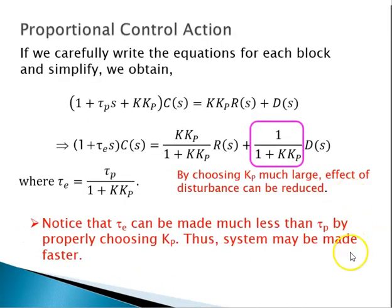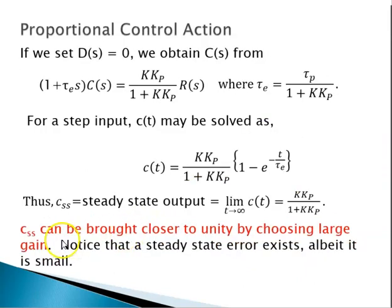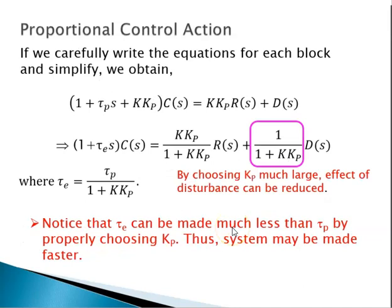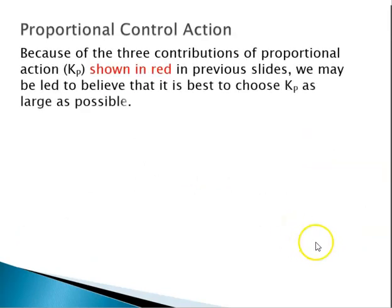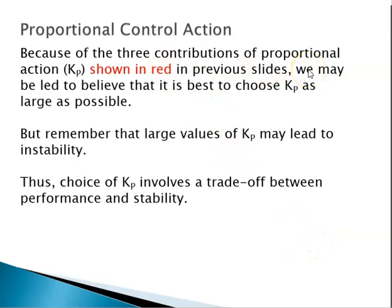Going back, there are a couple of advantages: by choosing K_p large we can reduce the effect of disturbance, bring the steady-state error close to zero, and make the time constant much smaller. These contributions of proportional control action may lead us to believe it's best to choose K_p as large as possible. But remember, large values of K_p may lead to instability. Thus, the choice of proportional gain involves a trade-off between performance and stability.